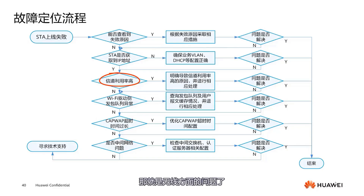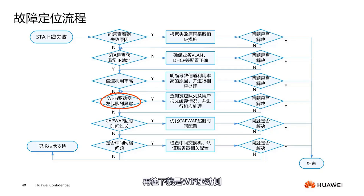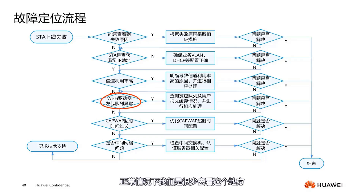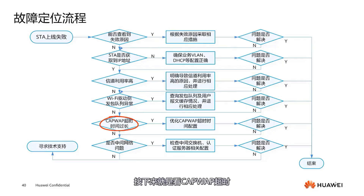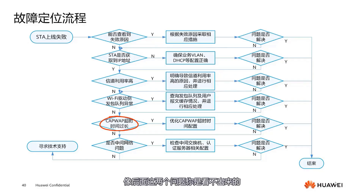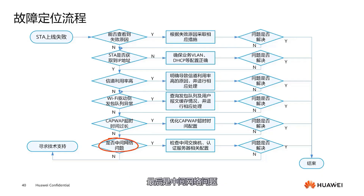Moving on, it could be the Wi-Fi driver side with abnormal cues. Next, there are CAPWAP timeouts, which we also rarely consider unless you are troubleshooting messages — otherwise you can't see it. For the last two issues, you need to capture packets to pinpoint where the problem lies. Finally, the middle network issue should have been diagnosed earlier. If the terminal can obtain an IP address, it can mostly come online, which rules out related middle network issues.